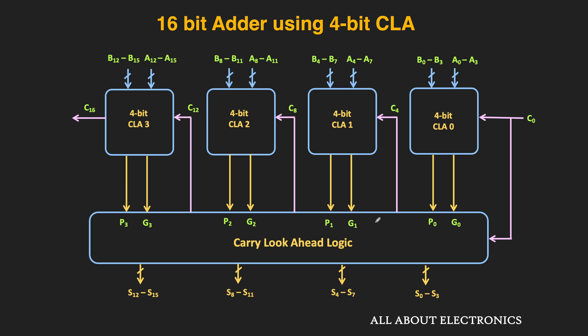For further speed improvement, with some added complexity, there is another design where 4-bit CLA blocks are used but the carry for each block is generated using an additional carry lookahead logic. Essentially, the carry lookahead logic is implemented in two stages: each 4-bit CLA has its own carry lookahead logic, and on top of that, there is one more carry lookahead logic block generating the carry for each block. Comparing this design with the 16-bit ripple carry adder, it is 4 times faster. This two-level approach is the more standard approach for designing 16-bit or 32-bit adders using 4-bit CLA blocks.